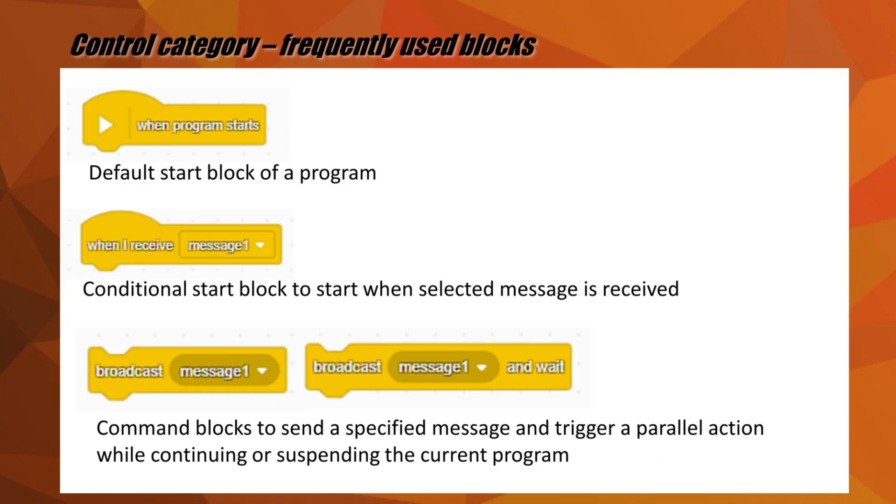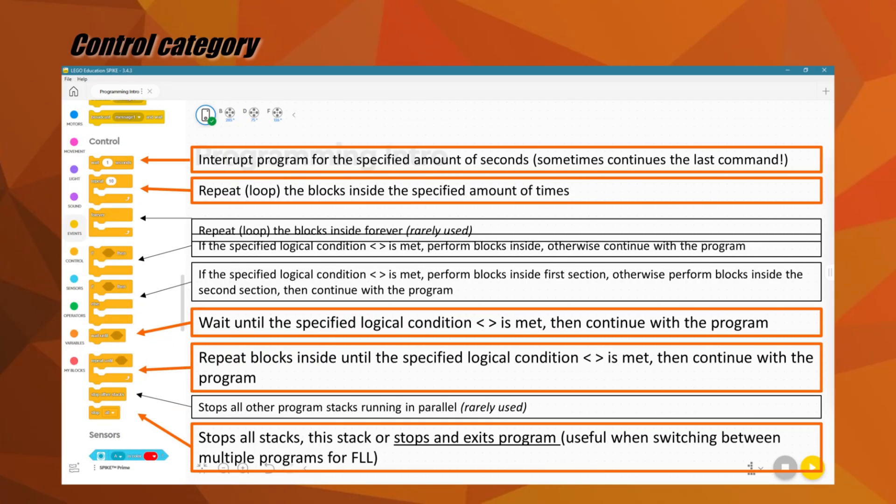The yellow blocks make up the events category. The most commonly used event blocks include the default program start block, conditional start blocks, and command blocks that can be used to trigger a parallel action while continuing or suspending the current program.